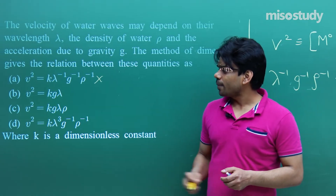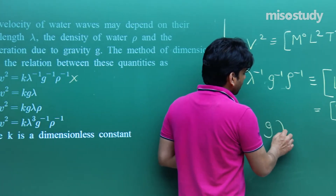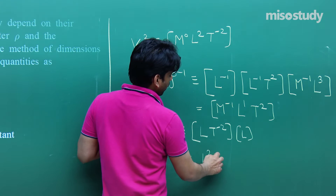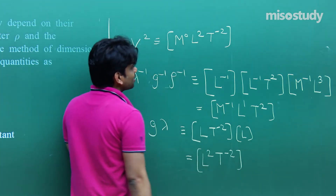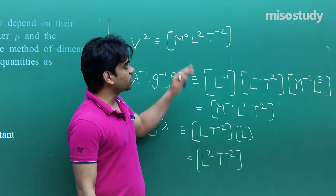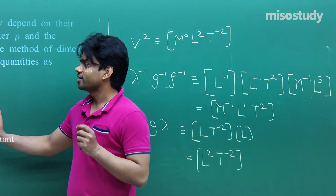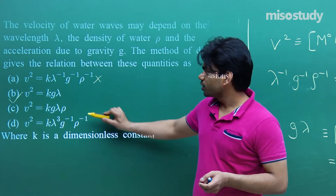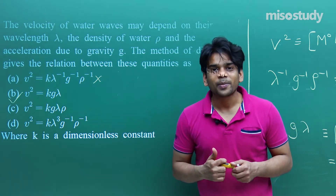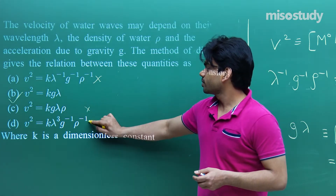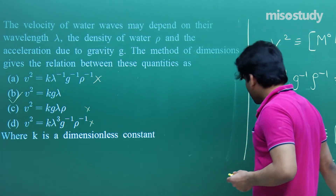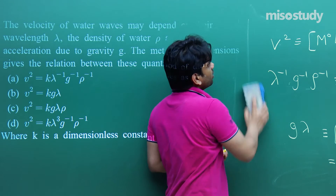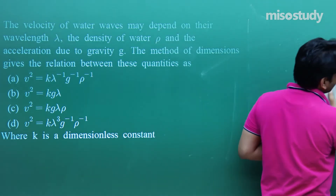Let's check option B: v² = k·g·λ. Dimension of g·λ is (LT⁻²)·(L) = L²T⁻². This matches the dimensional formula for v², which is M⁰L²T⁻². So option B is correct — v² = k·g·λ is the right answer. We need not check options C and D since this is a single-choice question. This was about verifying a formula using dimensional analysis.